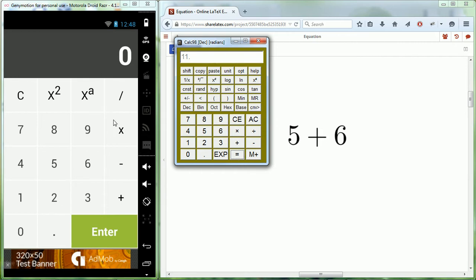Now an RPN calculator works similarly except you enter the two numbers first into what's called a stack, and then you do an operation on two stacks. So this is how it would work: you push 5, that enters into this first stack.